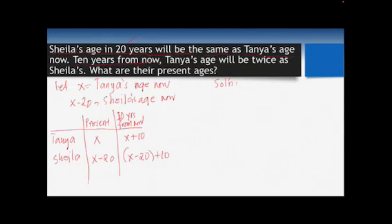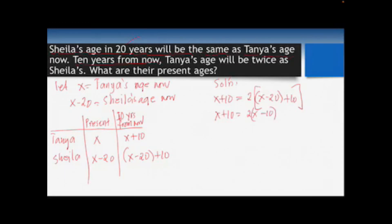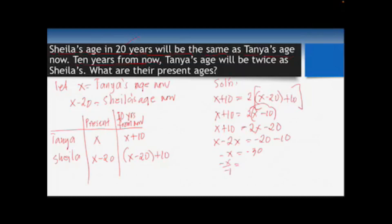Setting up the equation for 10 years from now: Tanya's age (x + 10) will be twice as old as Sheila's age (x − 20 + 10). So: x + 10 = 2(x − 10). Expanding: x + 10 = 2x − 20. Combining like terms: x − 2x = −20 − 10, giving −x = −30. Dividing both sides by −1, x = 30, so Tanya is 30 years old.